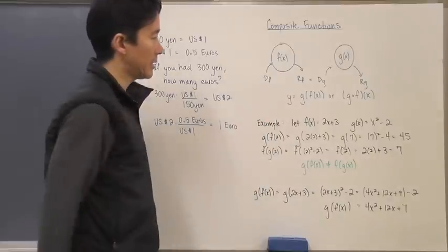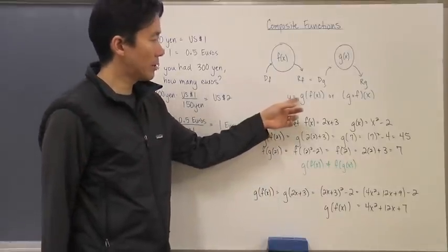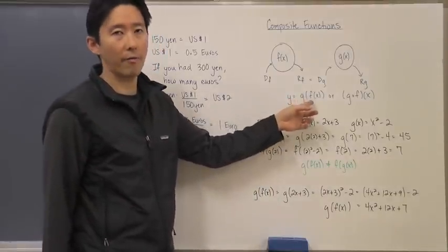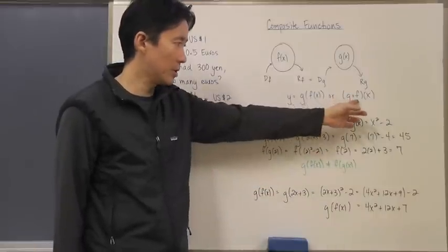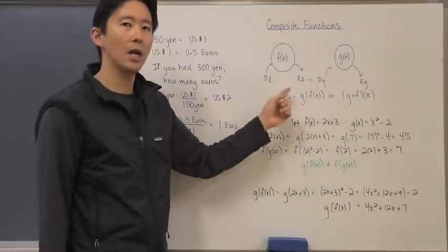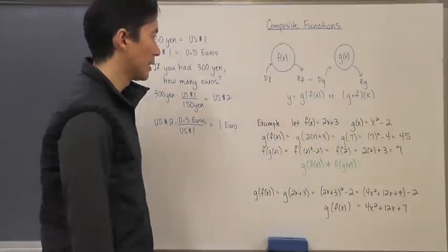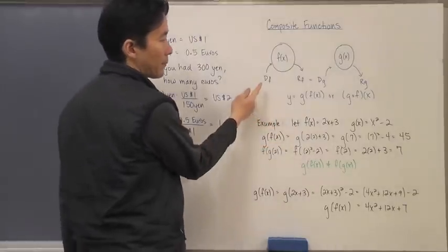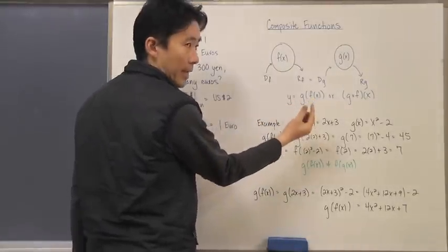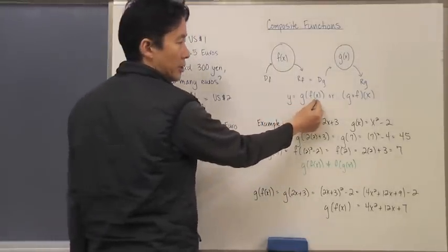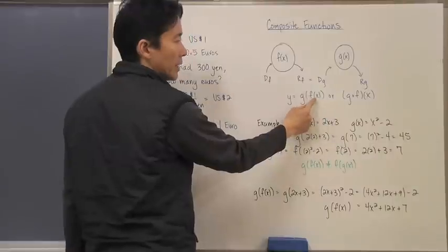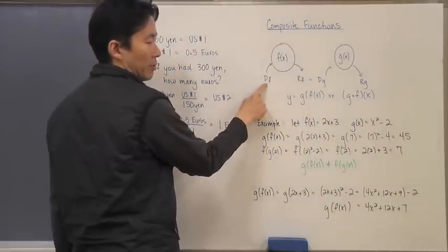This says Y is equal to G of F of X, or you can also see it written this way: G(F(X)). Notice that what happens is that, as with all of your order of operations, you start from the inside and work out.